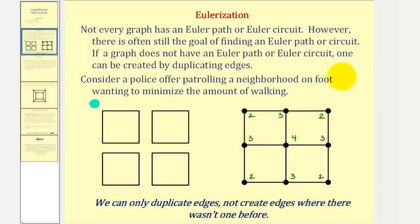And we cannot create new edges, we can only duplicate existing edges. So we cannot connect these two vertices here because this is creating a new edge, which is not allowed. We can think of this as trying to create a street through someone's property, which would not be allowed. And because we cannot connect the odd vertices directly, we'll have to duplicate edges along a path.